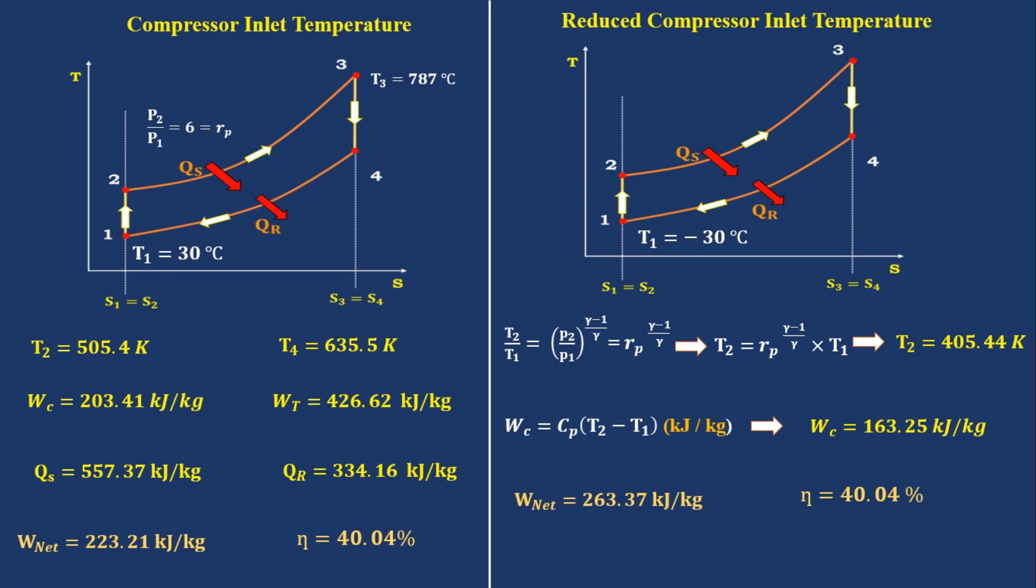If outlet temperature of compressor reduces, the heat given to the combustion chamber will increase. That is Qs is increased. Cp times T3 minus T2, where Qs becomes 657.83 kJ per kg for minus 30 degrees Celsius.